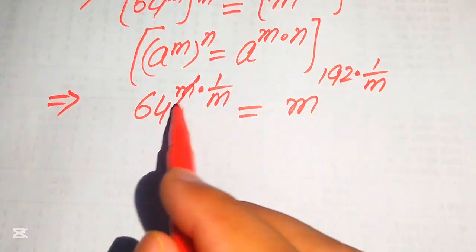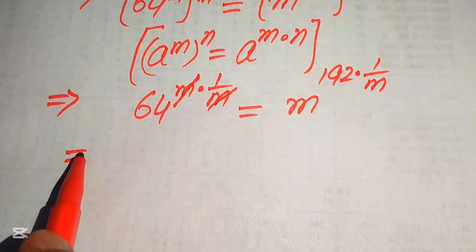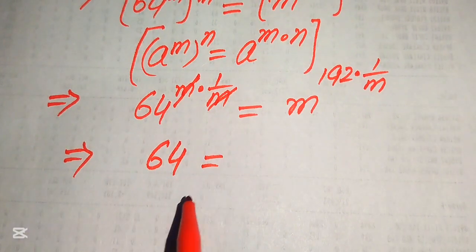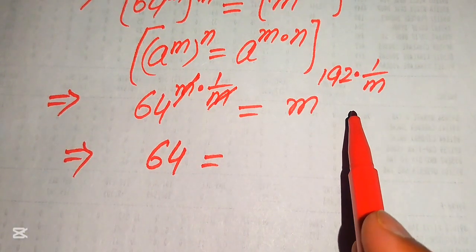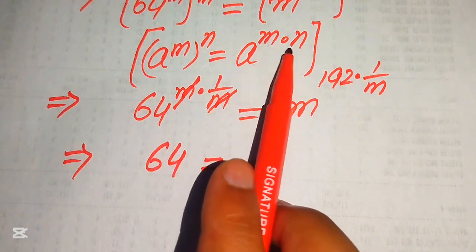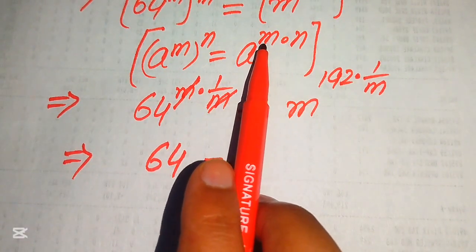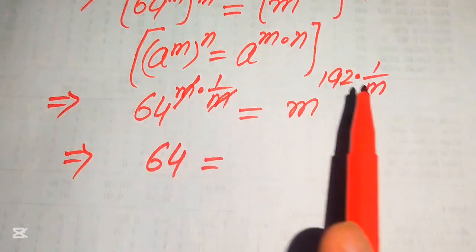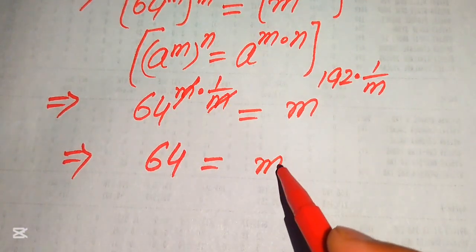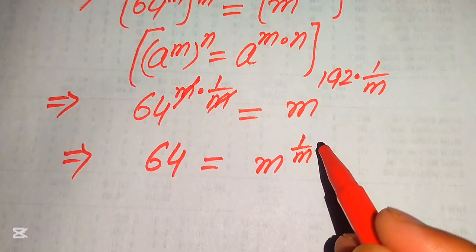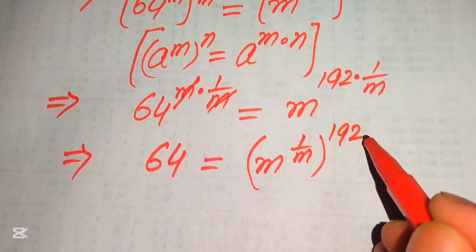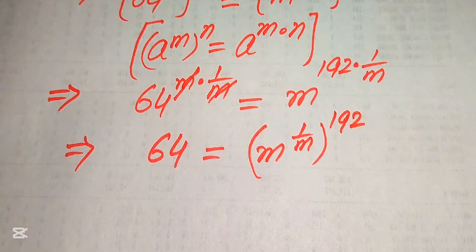Now, this m and this m cancel each other out, so on the left hand side we get 64. On the right hand side, we move 1 over m inside the term, giving us 1 over m to the power of 1 over m, and its whole power is 192.